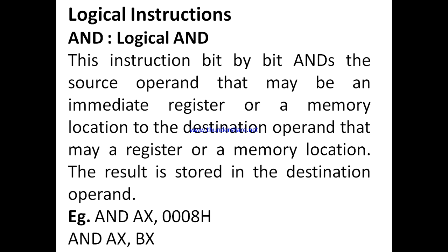Logical AND is a logical AND operation performed. The source operand can be a register, immediate, or memory location. The destination operand can be a register or memory location. The result is stored in the destination operand. The result of the AND operation here is 1, 0, 0, 0.